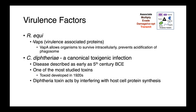Rhodococcus equi produces VAPs, or virulence-associated proteins. VAP-A is known to be particularly important for pathogenesis in equine infections, and it allows the organisms to survive intracellularly by preventing acidification of the phagosome.